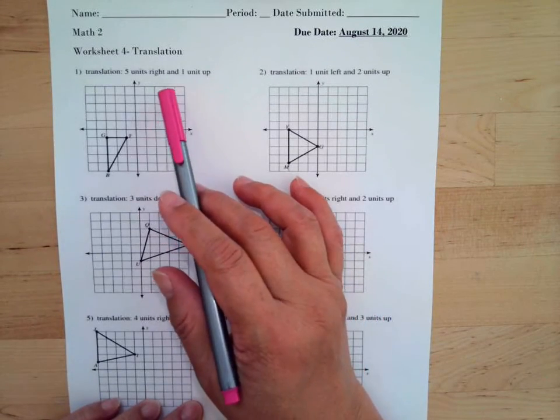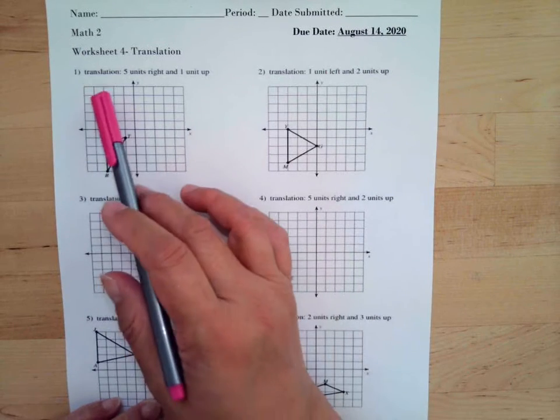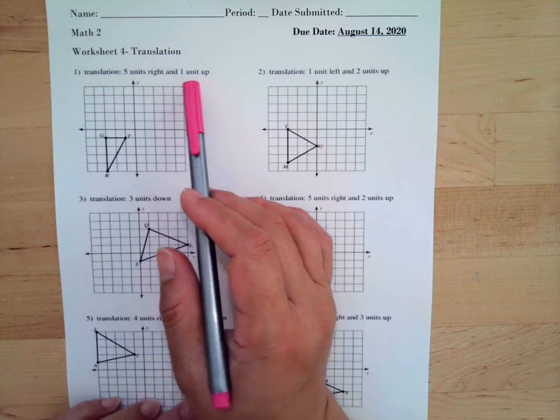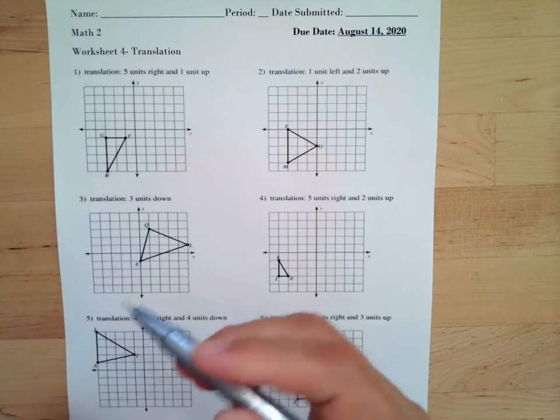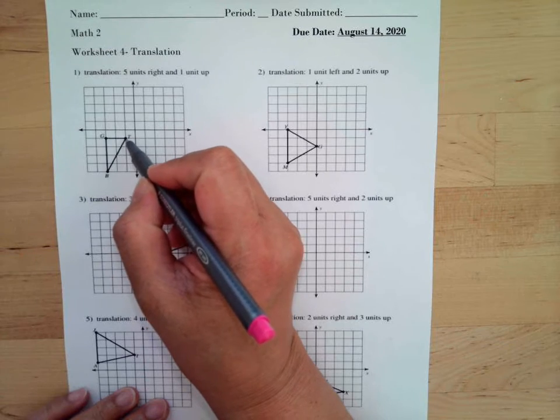Homework number four, translation, due date is August 14th by the end of the day. So translation five units right and one unit up. We will do five units to the right. This is a letter T.